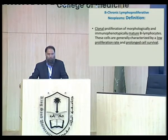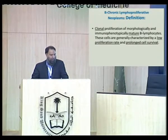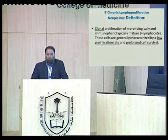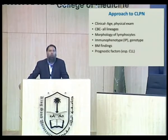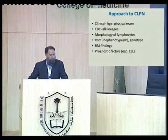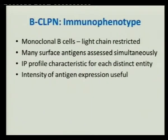I understand all of you are hematologists and don't treat or see lymphoma much, so I am restricted here to conditions which involve the peripheral blood particularly — the ones you should know and will come across in practice. By definition, B cell lymphoproliferative neoplasms are clonal, mature, and supposedly have a low proliferative rate, though this is not always true. They always have prolonged survival compared to aggressive neoplasms like large cell lymphoma. Our approach for all these conditions includes clinical age, physical examination, CBC, morphology — a stepwise approach.